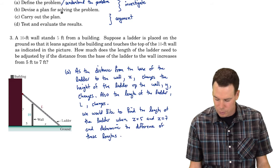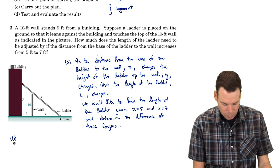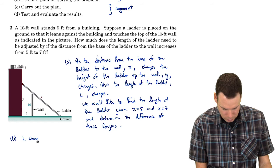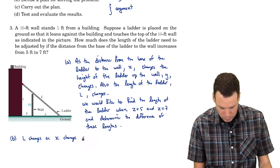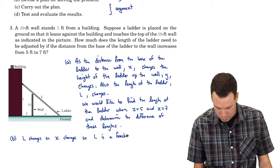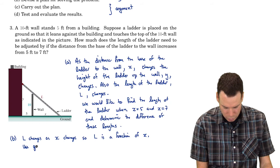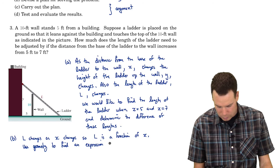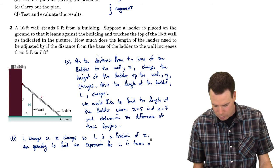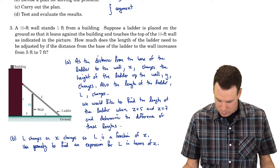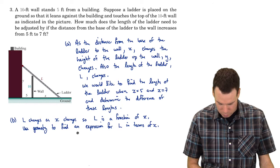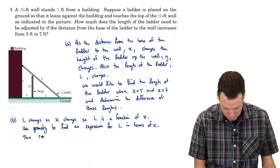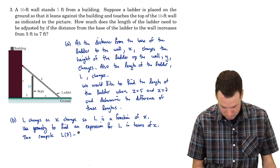Let's go ahead and devise a plan for solving the problem. We notice that L changes as X changes, so L is a function of X. We're going to use geometry to find an expression for L in terms of X. Once we've got this expression, we just evaluate: use geometry to find an expression for L in terms of X, then compute L(7) minus L(5). So there's our plan.